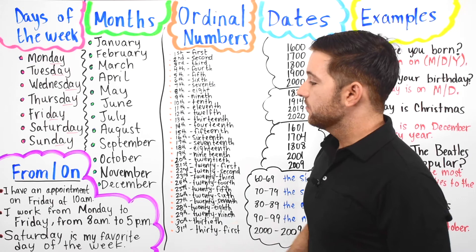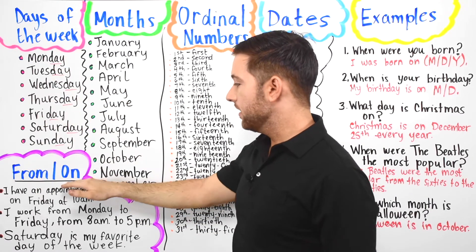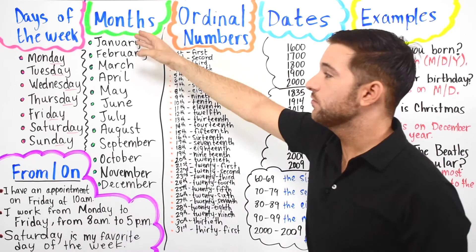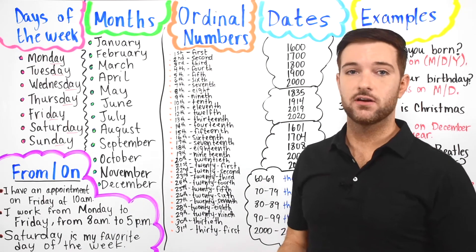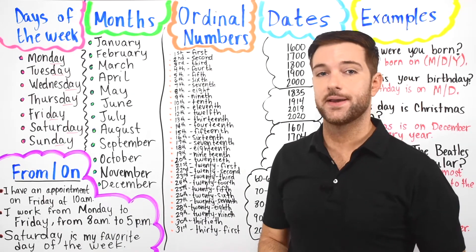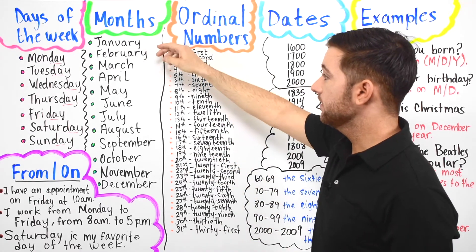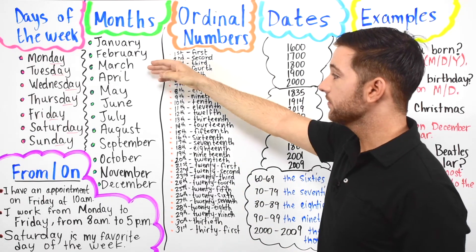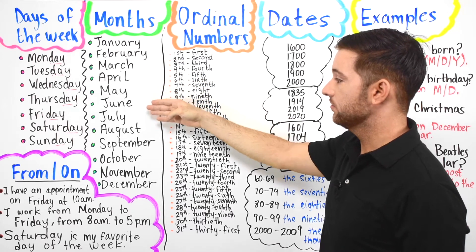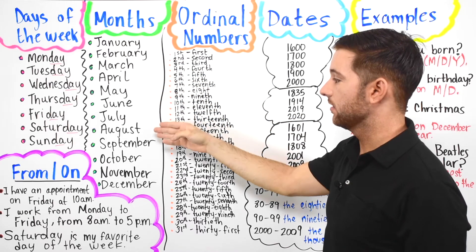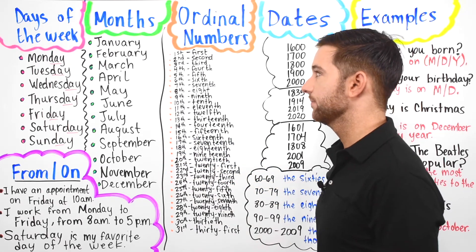Alright, we just learned the days of the week and 'from' and 'on.' Now let's move on to months of the year. Remember that there are 12 months in a year. The months are January, February, March, April, May, June, July, August, September, October, November, and December.